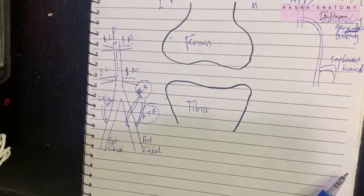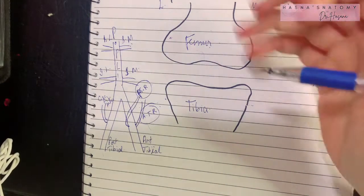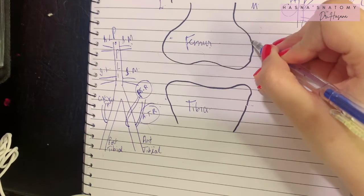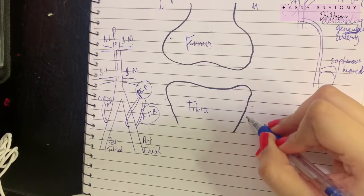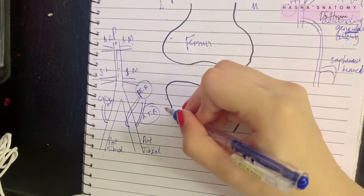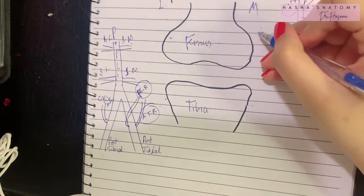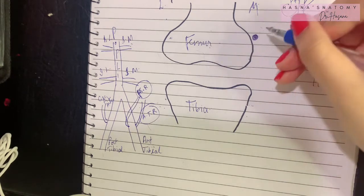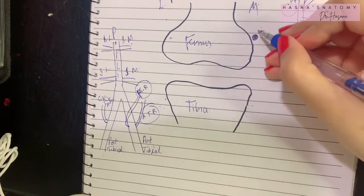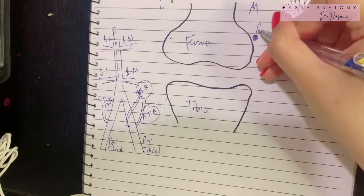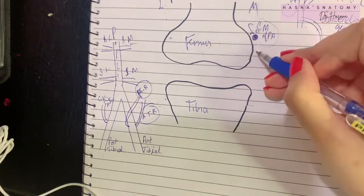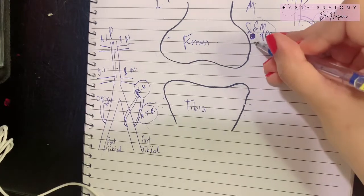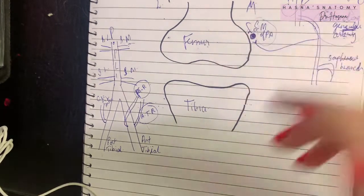The anastomosis of the knee joint is broadly divided into four parts: above the medial condyle of the femur, below the medial condyle of the tibia, above the lateral condyle of the femur, and below the lateral condyle of the tibia. On the medial side, above the medial condyle of the femur, the superior medial genicular branch of the popliteal artery anastomoses with the descending genicular artery.